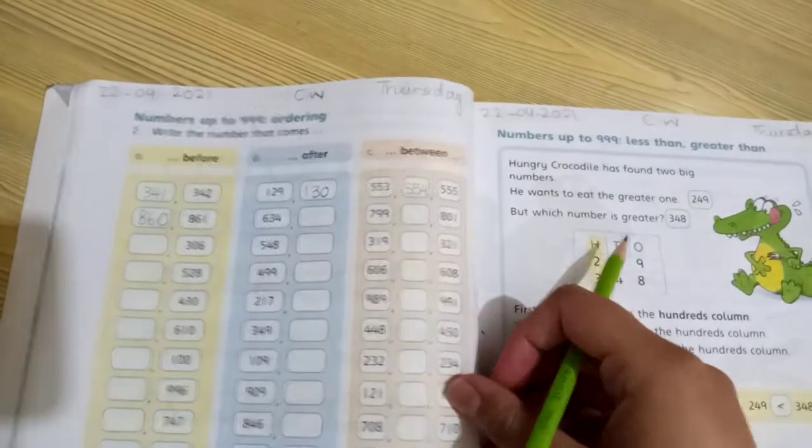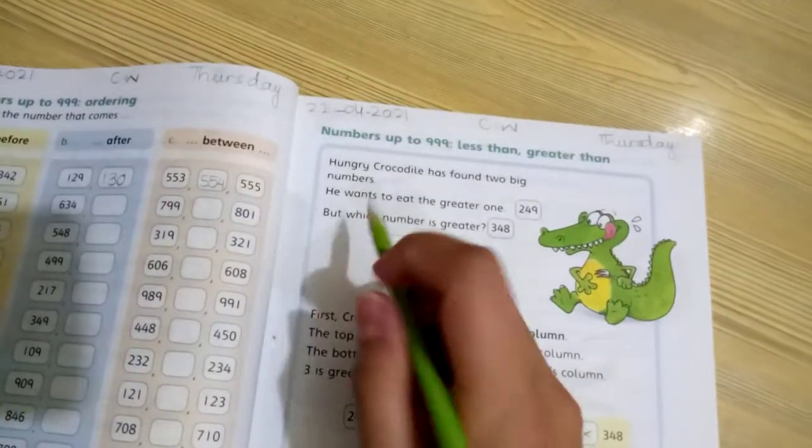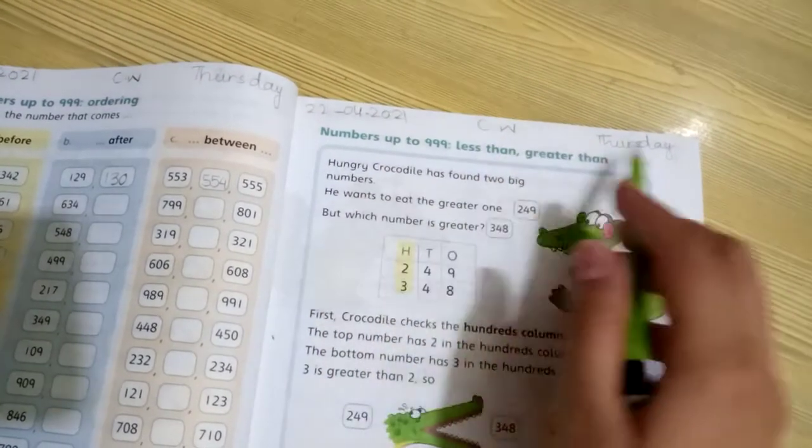Write down date on page 16: 22/4/2021, classwork and Thursday. Write the same date on the next page: 22/4/2021, classwork and Thursday. Let's start the page.